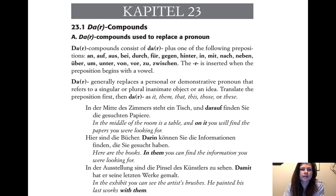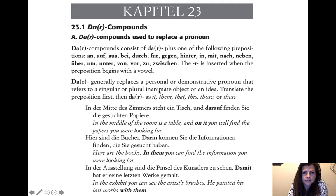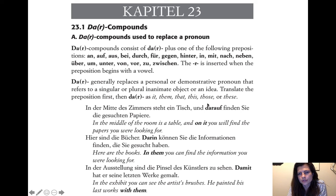Here are the da-compounds used to replace a noun. Da-compounds consist of 'da' or 'dar' plus one of the following prepositions — all the prepositions we've gone through can be made into da-compounds. The 'r' is inserted when the preposition begins with a vowel. 'Da' generally replaces a personal or demonstrative pronoun that refers to a singular or plural inanimate object or an idea — basically any noun that's not a person. Translate the preposition first, then 'da' as 'it,' 'them,' 'that,' 'those,' etc.